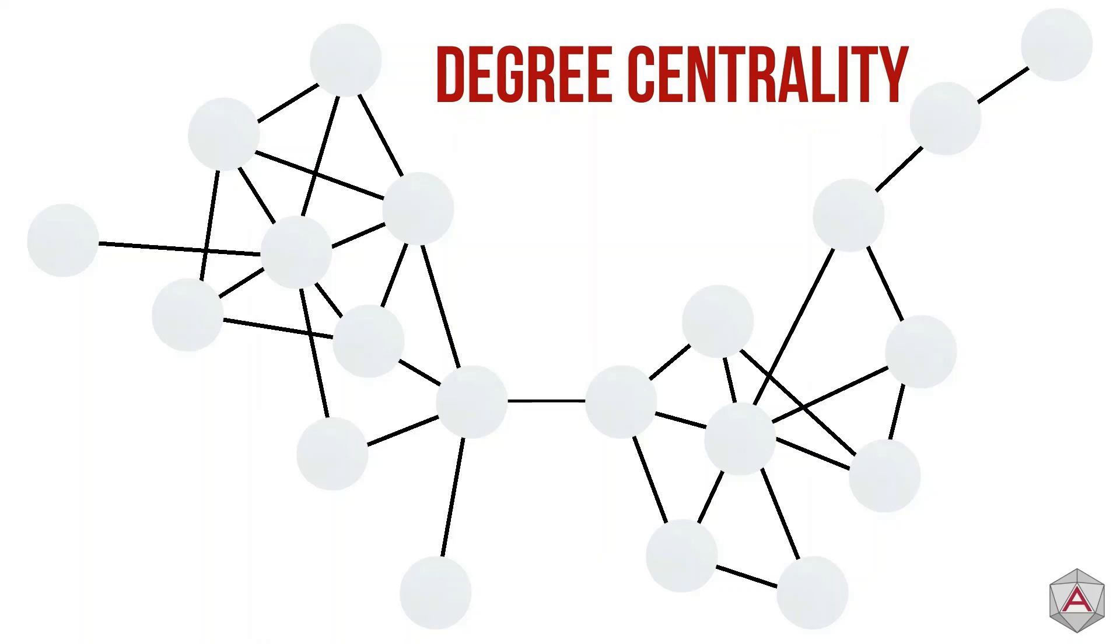A degree in graph theory is simply the count of edges attached to a node. Take this node for example. This has 3 edges, therefore the degree of this node is 3. Mathematically, we can say degree centrality of a node V is the same as that of the degree of the node. Let's apply this to our whole graph.